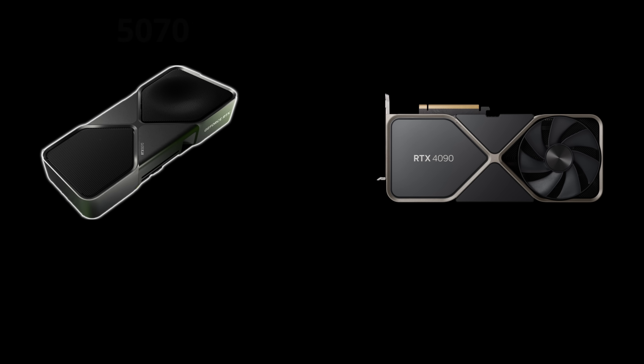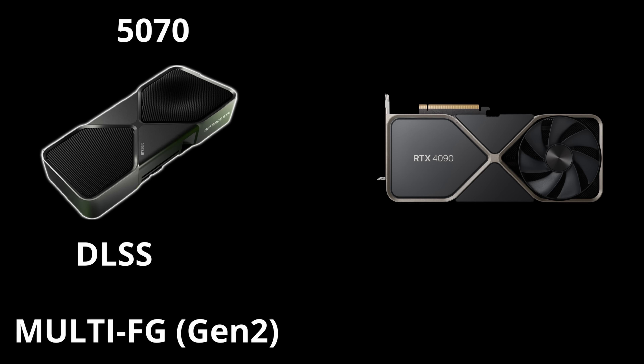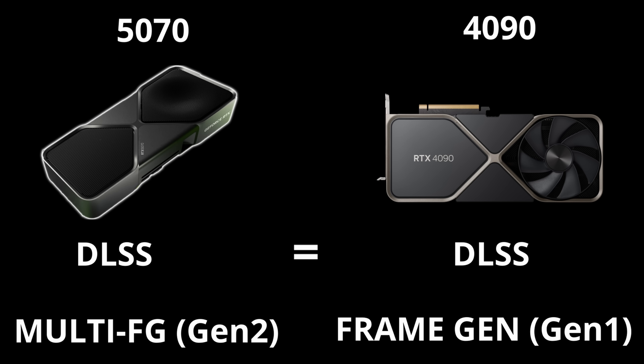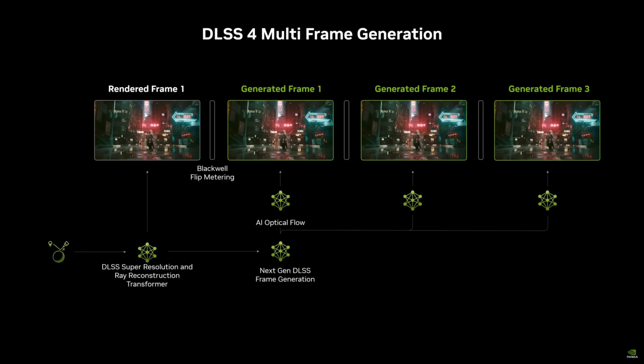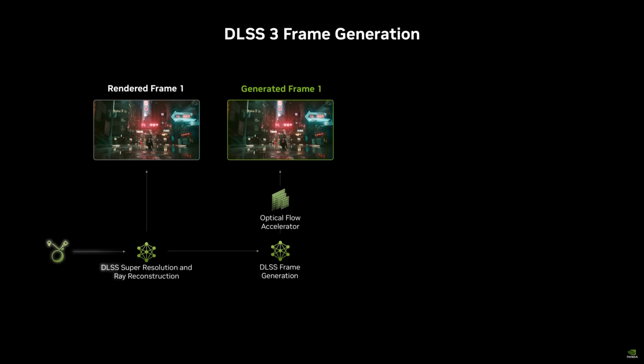What that means is DLSS and frame generation. Essentially the claim is this: if you take a 5070 and enable DLSS and turn on multi-frame generation, it will then rival the 4090 with the same DLSS quality preset and single frame generation.